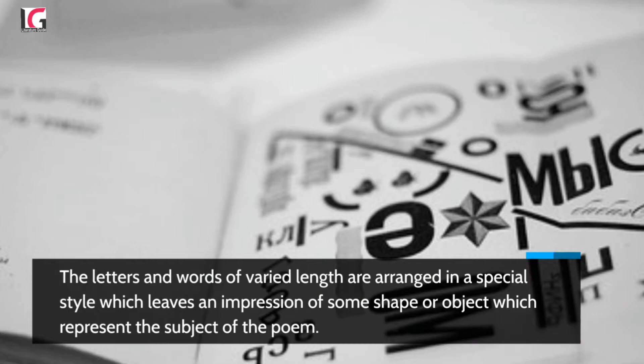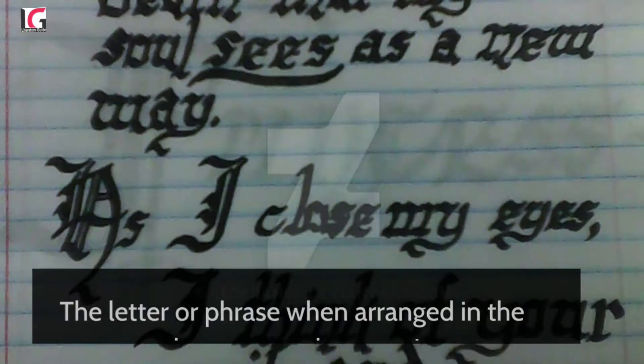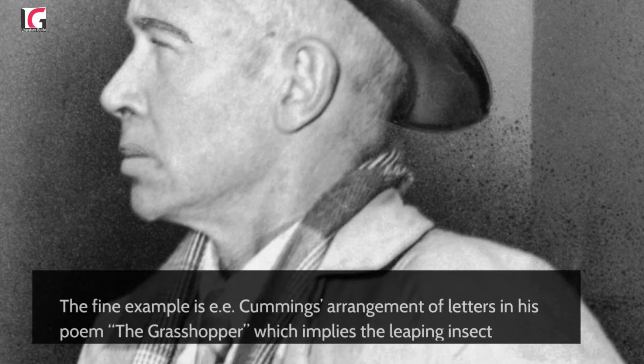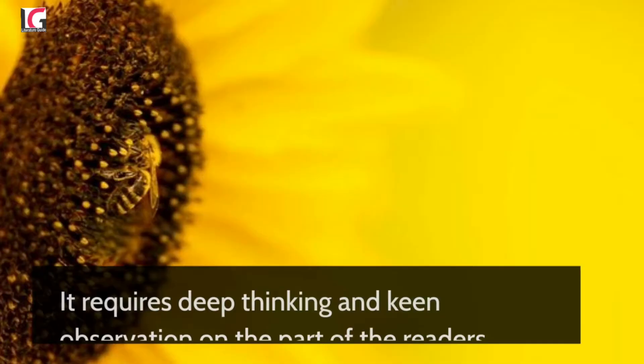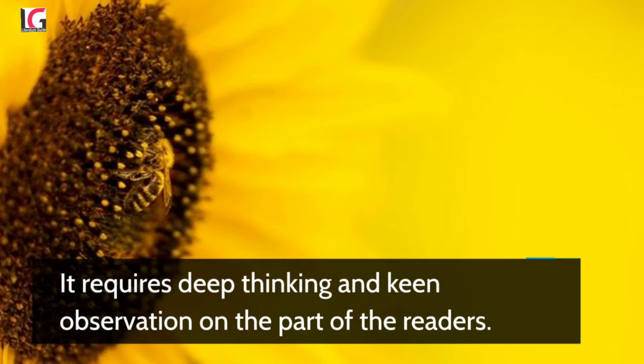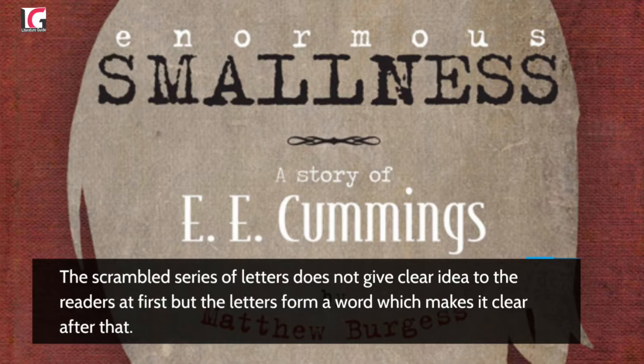Concrete poems cannot be read in the conventional way because they sometimes comprise a single phrase or letters in haphazard order. The letter or phrase, when arranged in the proper order, conveys the meaning. A fine example is E.E. Cummings' arrangement of letters in his poem The Grasshopper, which implies the leaping insect grasshopper but only after arranging the letters. It requires deep thinking and keen observation on the part of the readers. The scrambled series of letters does not give a clear idea at first, but the letters form a word which makes it clear.